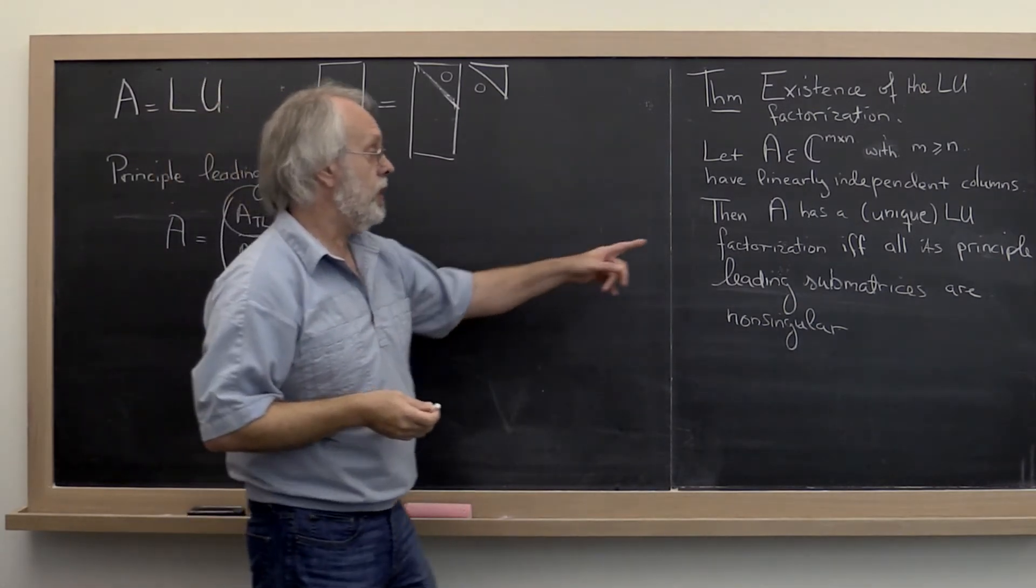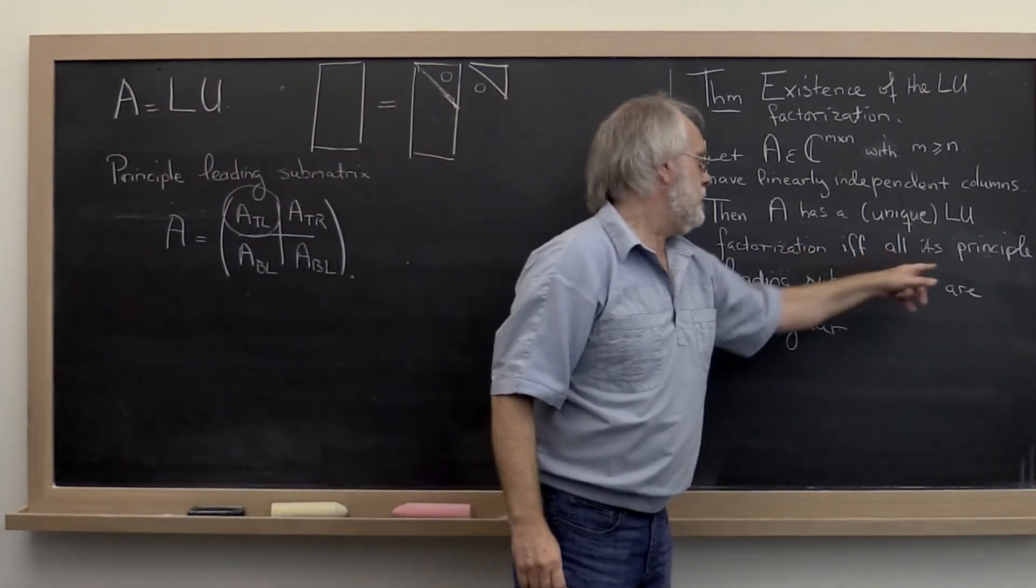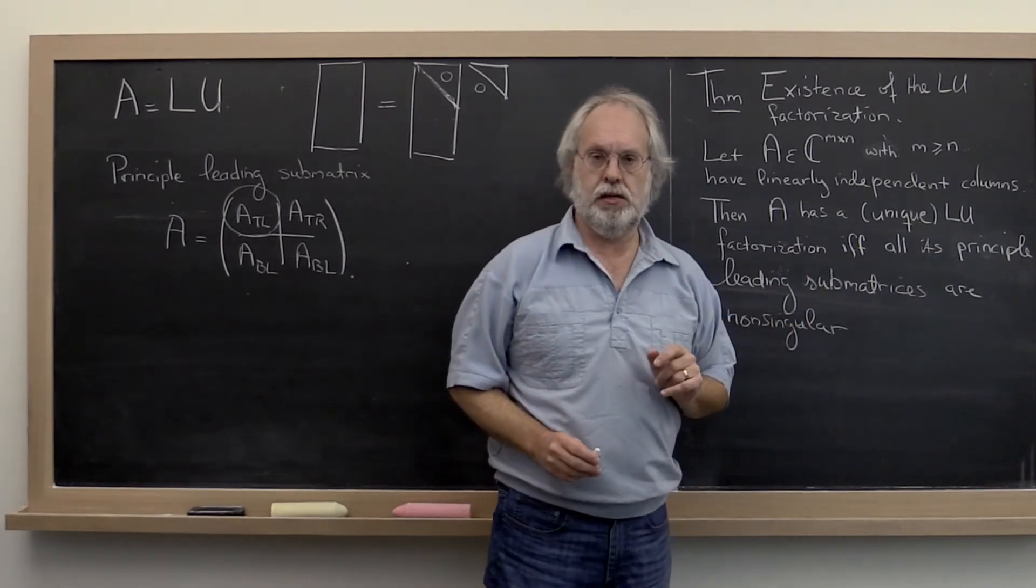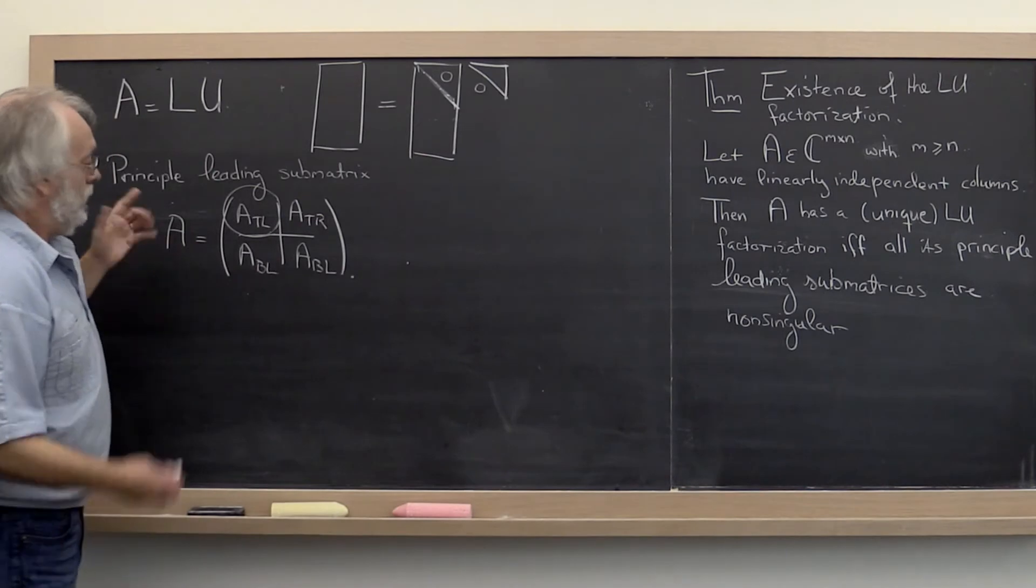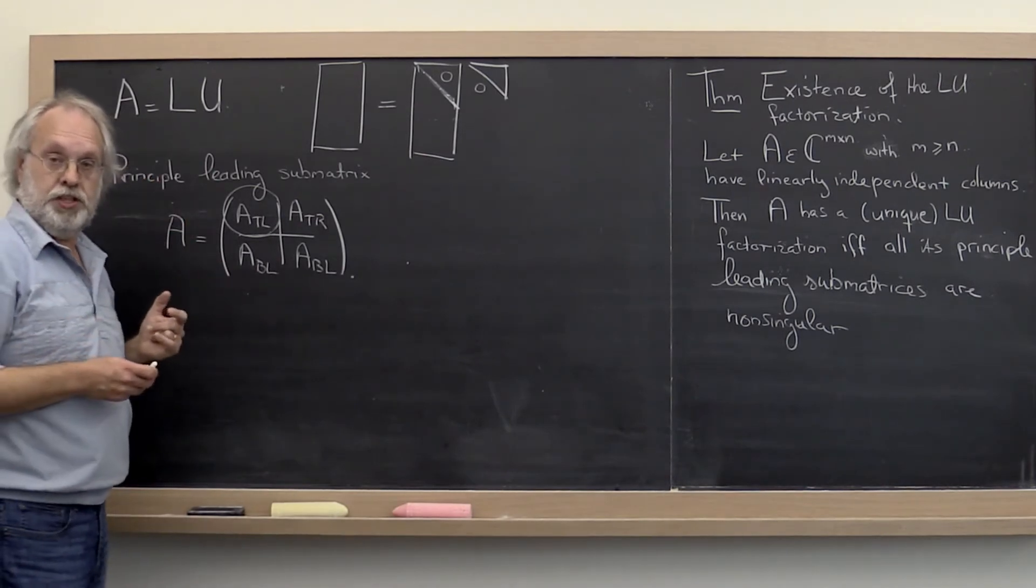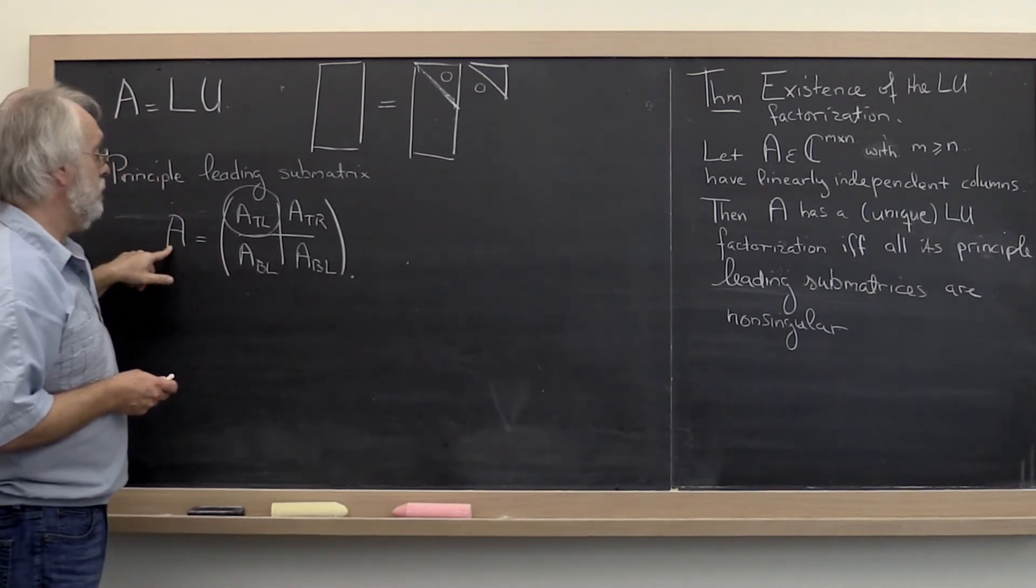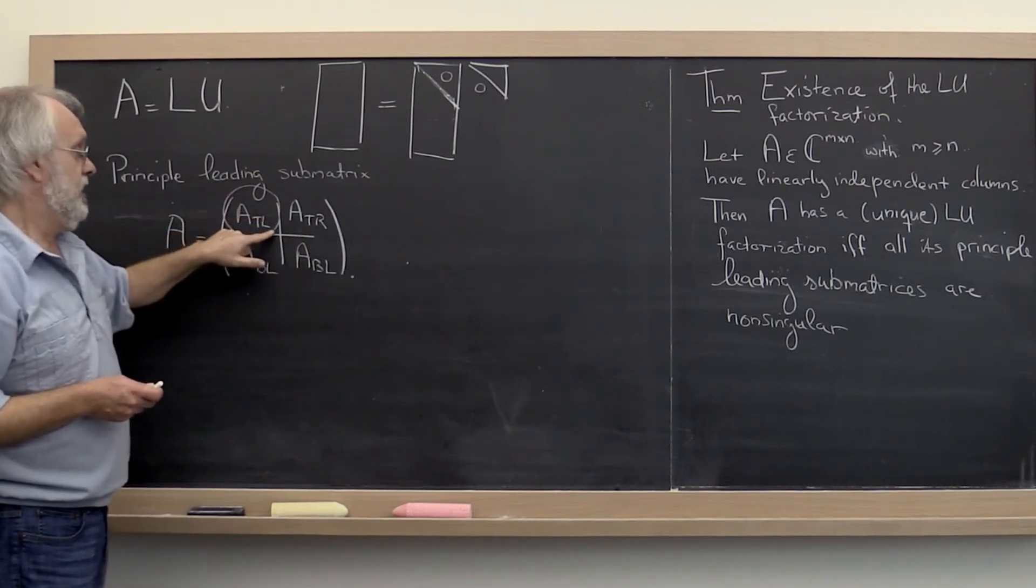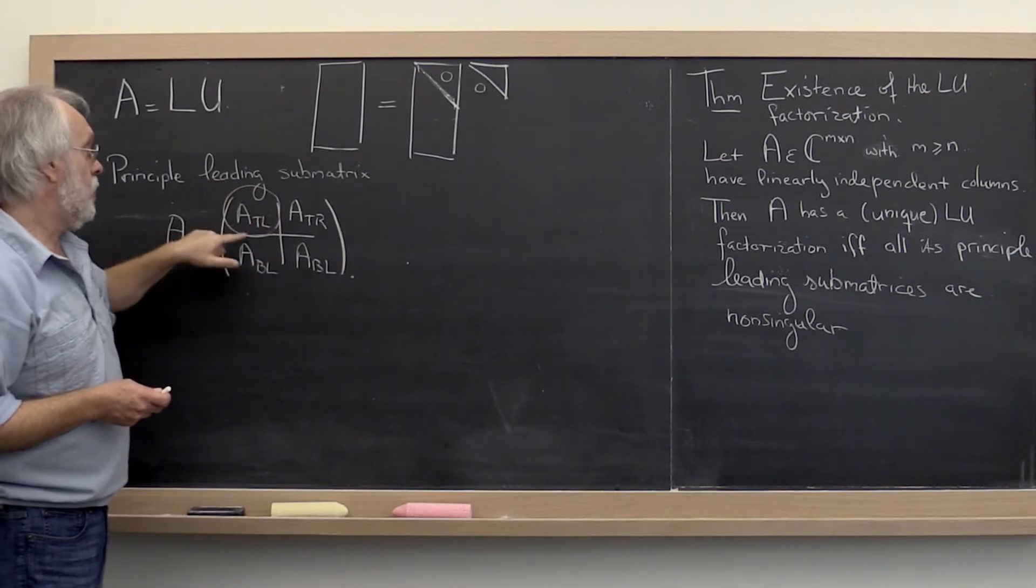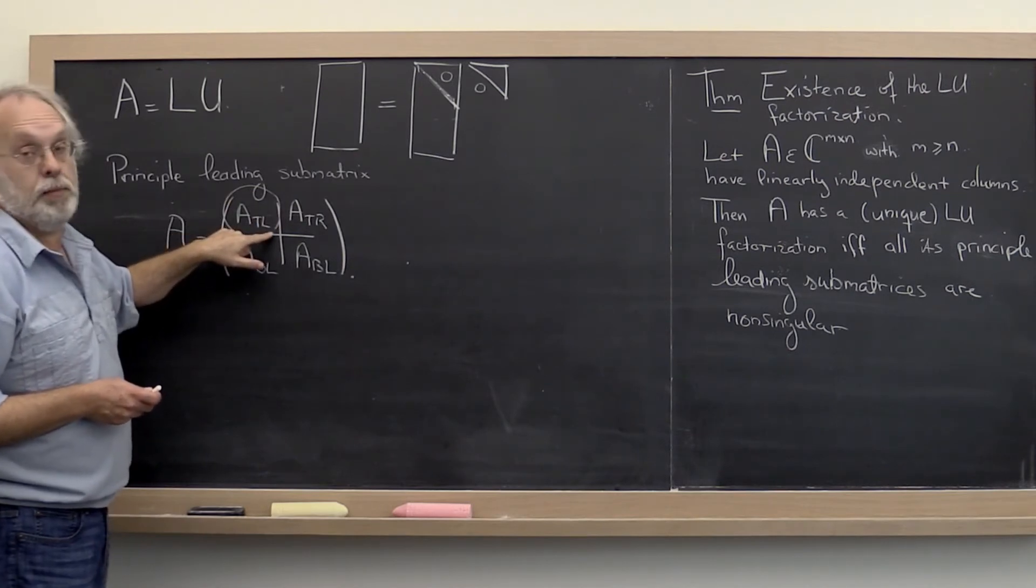The second thing we need to talk about is what is a principal leading sub-matrix? We're really good at partitioning matrices now. So if you take your matrix A and partition it into quadrants, and this top left quadrant is square, then it's called a principal leading sub-matrix.